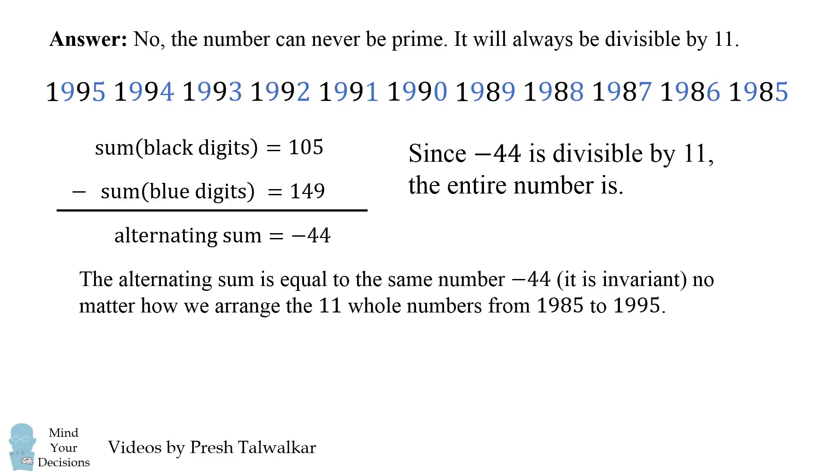So we've just shown that this particular number is divisible by 11, but I'm going to claim it'll be true no matter how we arrange these 11 numbers. The reason is that the black digits will always be in odd positions, and the blue digits will always be in the even positions.